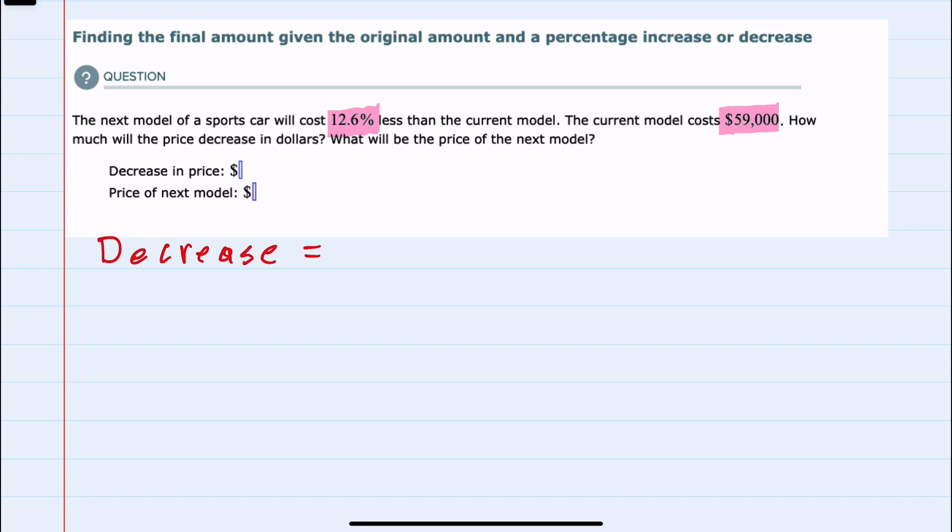I would convert that percentage into a decimal. So move the decimal place two places to the left, 0.126. I would multiply that by the original price, here $59,000. And doing that calculation would give us a decrease of $7,434.